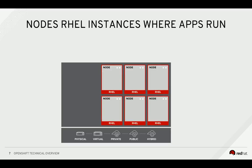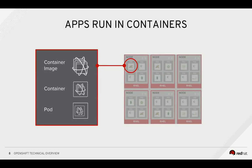An OpenShift cluster is made up of a number of different hosts, but there are two main types of systems in OpenShift. The first are called application nodes. Application nodes are where the containers that make up our applications will run. These hosts are simply Red Hat Enterprise Linux systems that have some of the OpenShift components installed to be able to run our containers. Cluster resources can also be expanded at any time by adding additional nodes to the cluster.